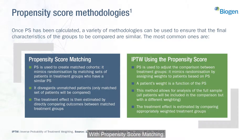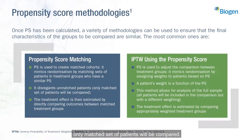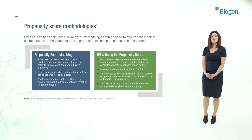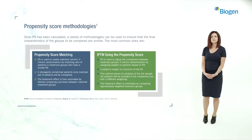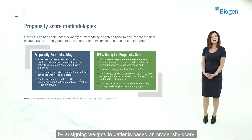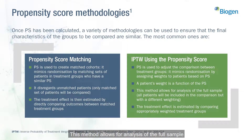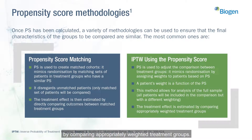With propensity score matching, the propensity score is used to create matched cohorts. It mimics randomisation by matching sets of patients in treatment groups who have similar propensity scores, and disregards unmatched patients — only matched sets of patients will be compared. The treatment effect is then estimated by directly comparing outcomes between matched treatment groups. With inverse probability of treatment weighting, the propensity score is used to adjust the comparison between treatment groups. It mimics randomisation by assigning weights to patients based on their propensity score. This method allows for analysis of the full sample, and the treatment effect is estimated by comparing appropriately weighted treatment groups.